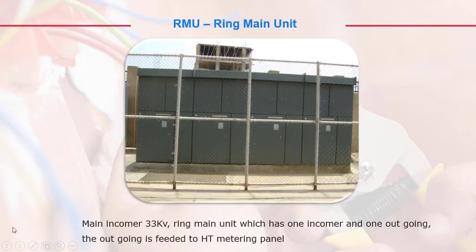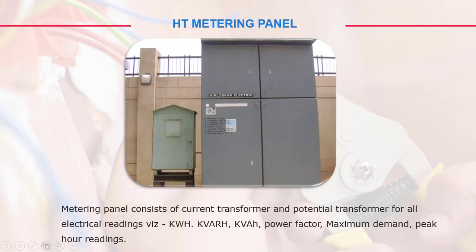Now we will go on a tour of this property. RMU — what does that mean? It is a Ring Main Unit. The main 33 kV incomer feeds into the ring main unit, which has one incomer and one outgoing. The outgoing feeds to the HT metering panel, which consists of current transformers and potential transformers for all electrical readings.